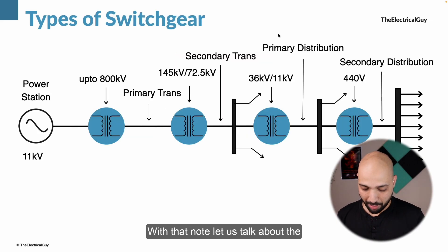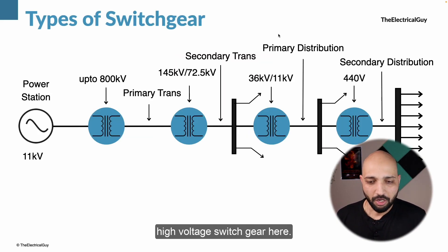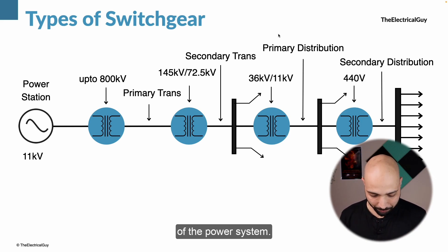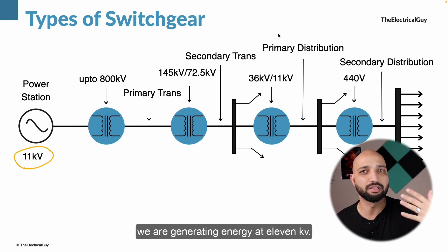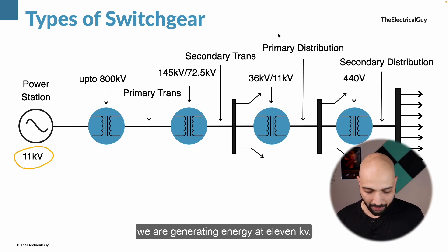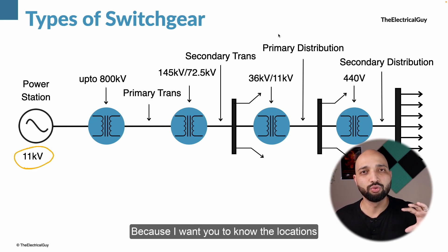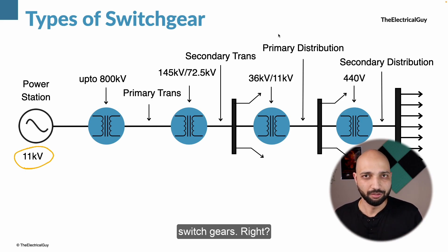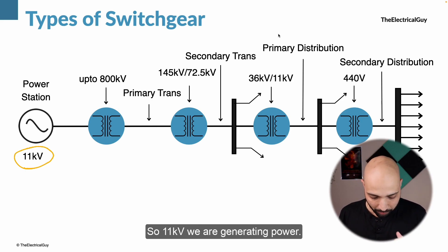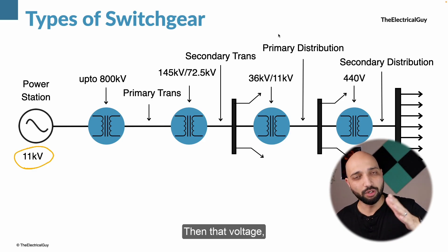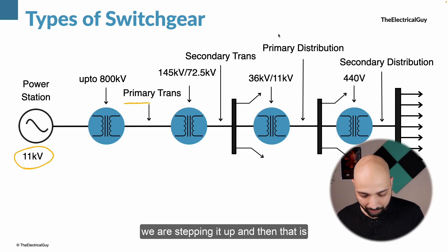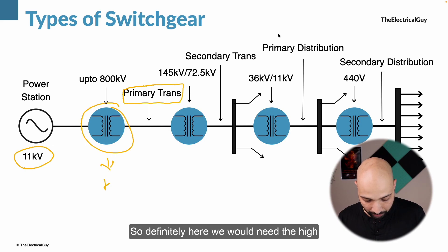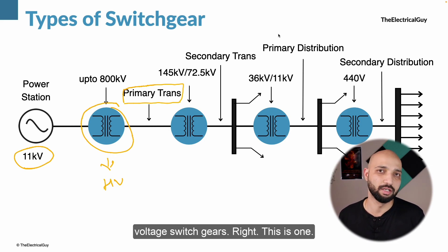With that, let us talk about the high voltage switchgear. On the screen you can see a typical single line diagram of the power system. Here is the generating station where we are generating energy at 11 kV. I am showing this so you know the locations where we would need the high voltage switchgear. At 11 kV we generate power, then step it up for primary transmission — and definitely here we would need the high voltage switchgear.